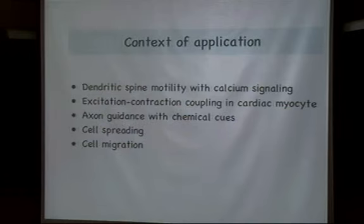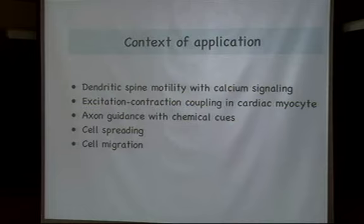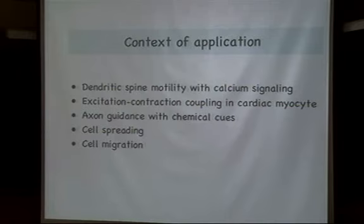The main application context of the proposed mathematical and computational framework is mostly biological problems. For example, in neuroscience and the transmission of neural information, synapses, dendrites, and axons are very important compartments. At the dendrite, which is related to learning and memory mechanisms, the dendritic spine is actually dynamically moving — this is called dendritic spine motility.